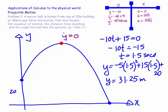Working that out, y equals 31.25 metres. Since we took the upward direction as positive, this is the maximum height above ground. The ball reaches its peak at 31.25 metres, which is 11.25 metres above the top of the building where it was kicked from.